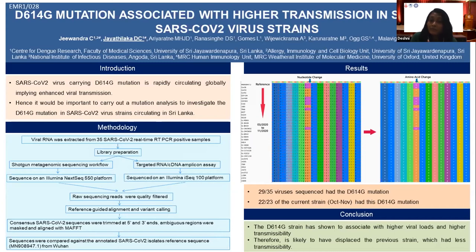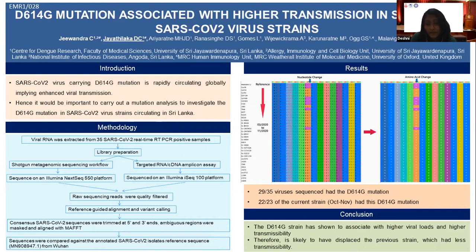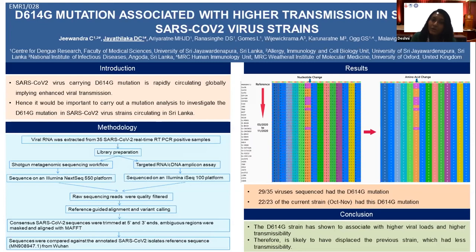Going back to the beginning of the pandemic in March, virus strains from several returnees from Europe had the D614G mutation. At that time, virus strains from returnees from Bangladesh or the Middle East did not have this mutation. Then in April, we observed this mutation in community clusters in the Kalamu Municipal Area, and in May it was associated with the Navy cluster, and in July with the Kandakadu Drug Rehabilitation Center cluster. From March to November, the virus strain with D614G mutation became the predominantly circulating virus strain in Sri Lanka.